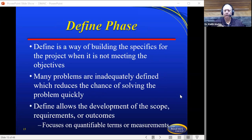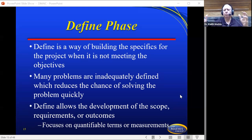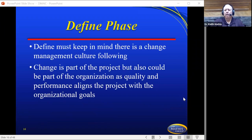Let's go through each of the DMAIC phases. The first is Define. This is a hard situation because people misdefine the problem many times. Define is a way of building the specifics for the project when it is not meeting the objectives. Many problems are inherently misdefined, which reduces the chance of solving the problem quickly. Define allows the development of the scope requirements and outcomes, and focuses on quantifiable terms or measurements. Many times we define the wrong thing, which means when we start doing analysis we're analyzing the wrong thing, and when we start fixing something we're fixing the wrong thing. Define must keep in mind that change management culture follows, as quality and performance aligns the project with organizational goals.